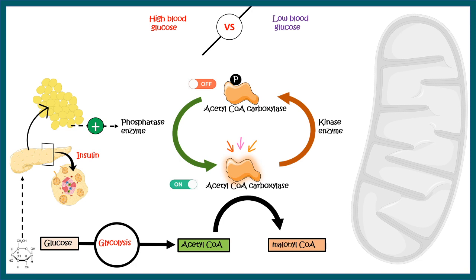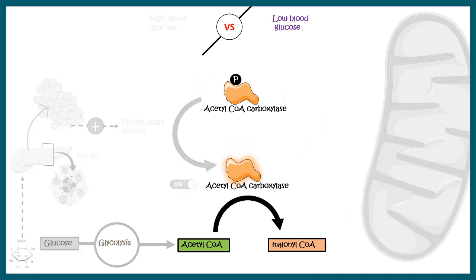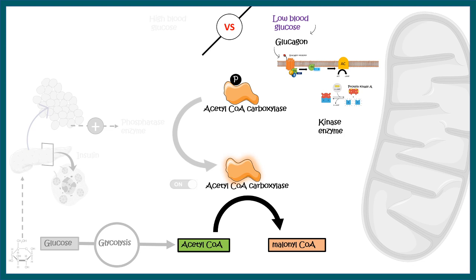When glucose levels are low, glucagon levels are high. Glucagon activates specific kinase enzymes, which phosphorylate acetyl-CoA carboxylase and ultimately inactivate it, so fatty acid biosynthesis cannot take place in the cytoplasm. In short, glucagon prevents fatty acid biosynthesis whereas insulin augments it — insulin and glucagon act like a switch, modulating this biosynthetic pathway in opposing fashion.